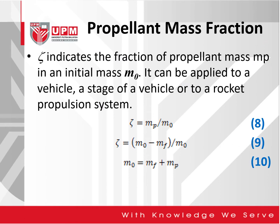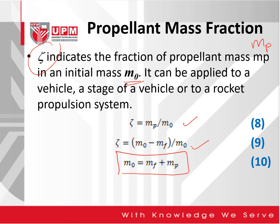The next one is propellant mass fraction, which is denoted by the symbol Zeta. It indicates the fraction of propellant mass Mp, M subscript P, in an initial mass M0. It can be applied to a vehicle, the stage of a vehicle, or to a rocket propulsion system. It can be written as Zeta equal to the propellant mass divided by the initial mass M0, and equals M0 minus MF divided by M0, which is equation 9. Finally, it can also be written as M0 equal to MF plus Mp.